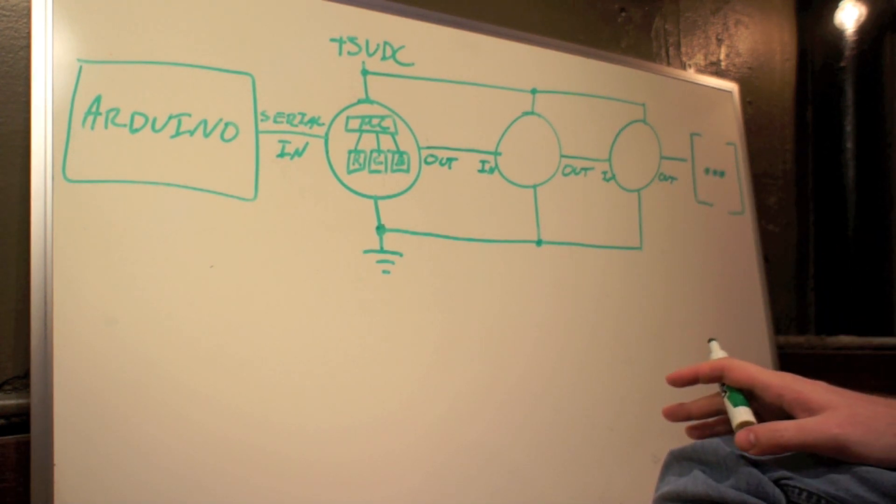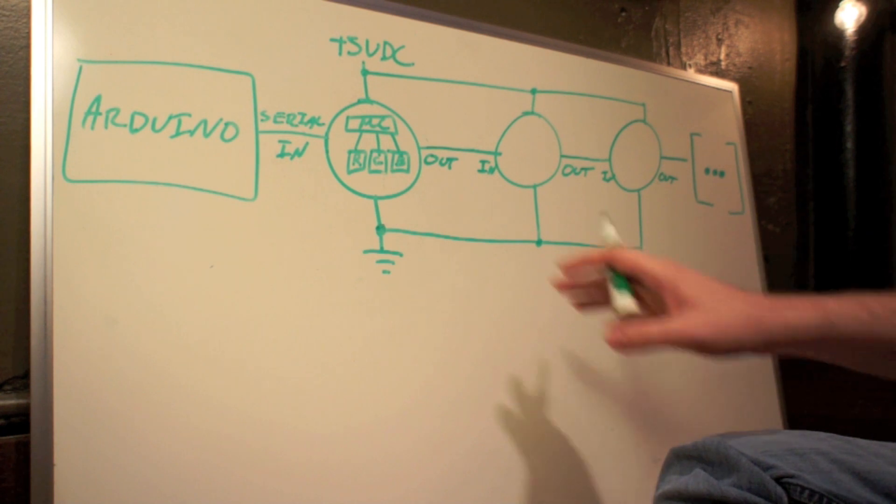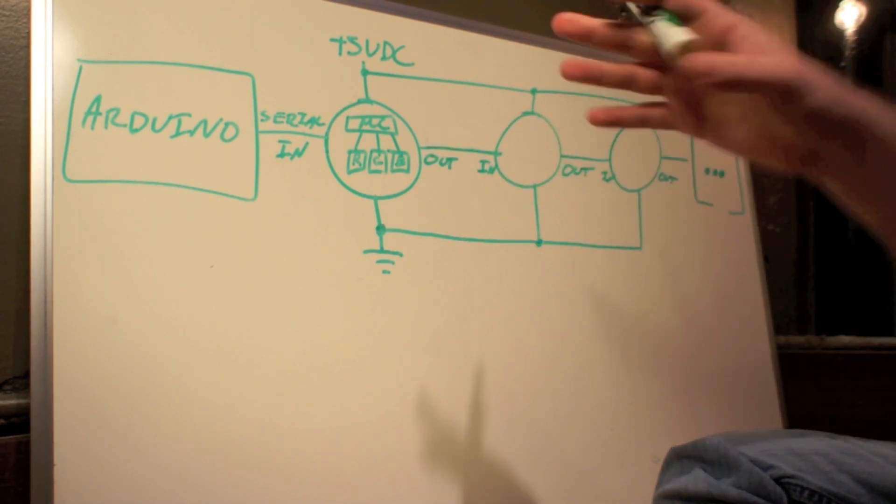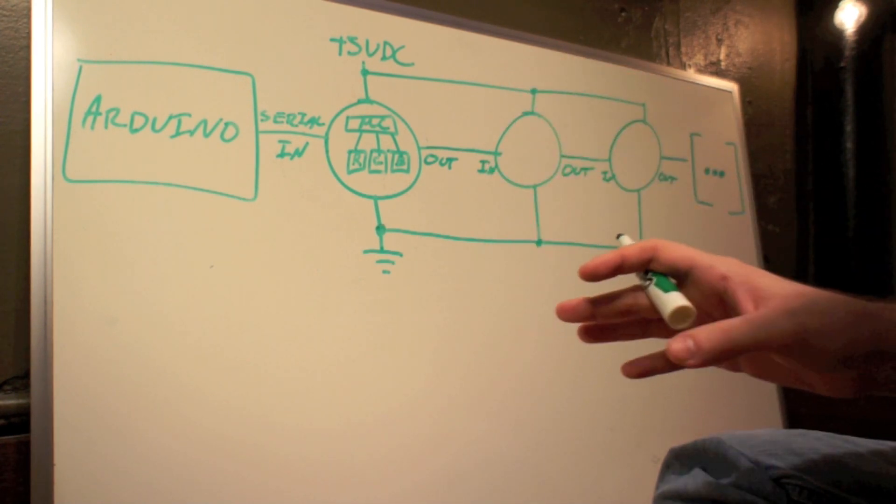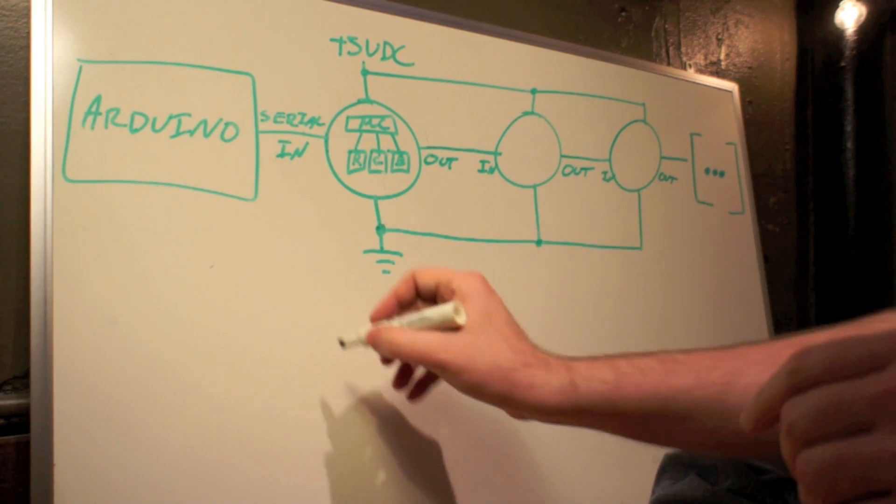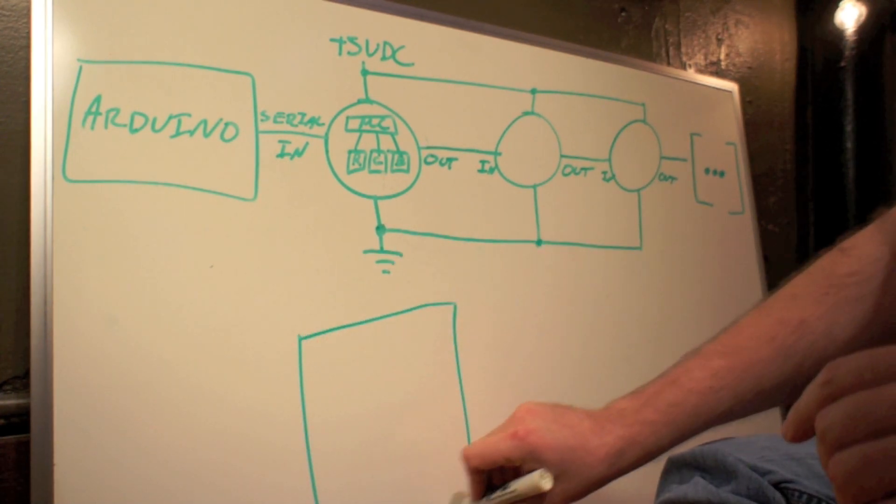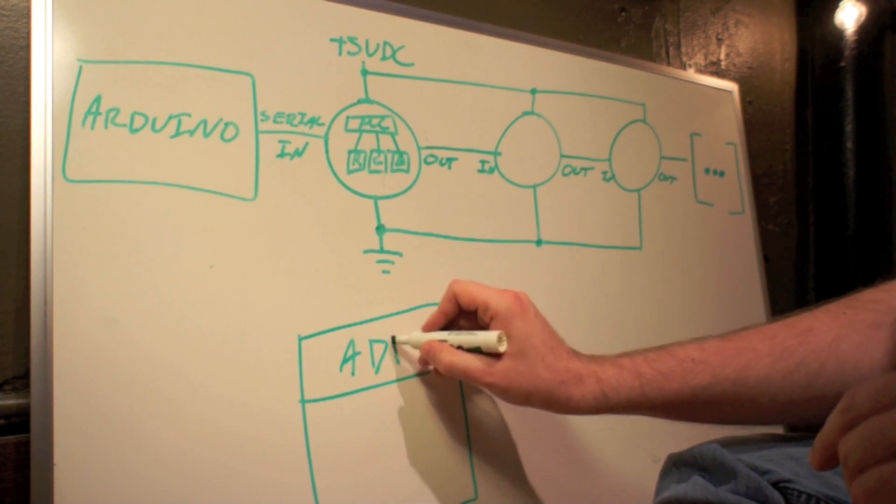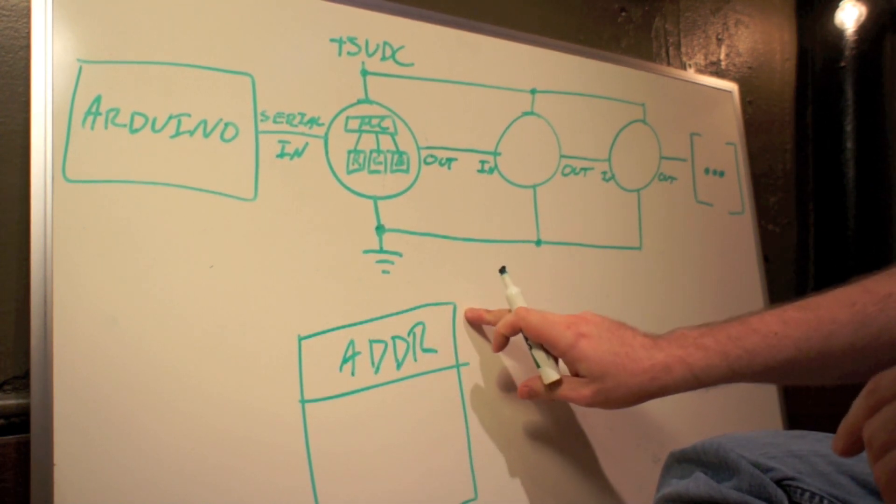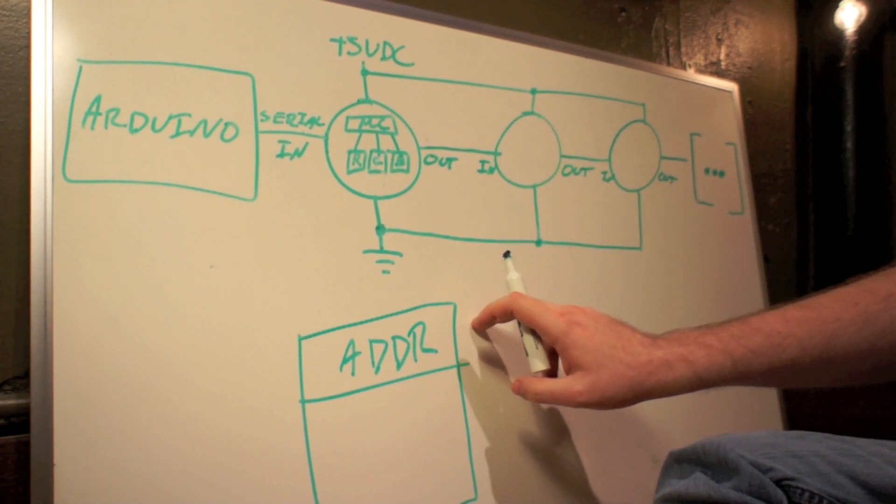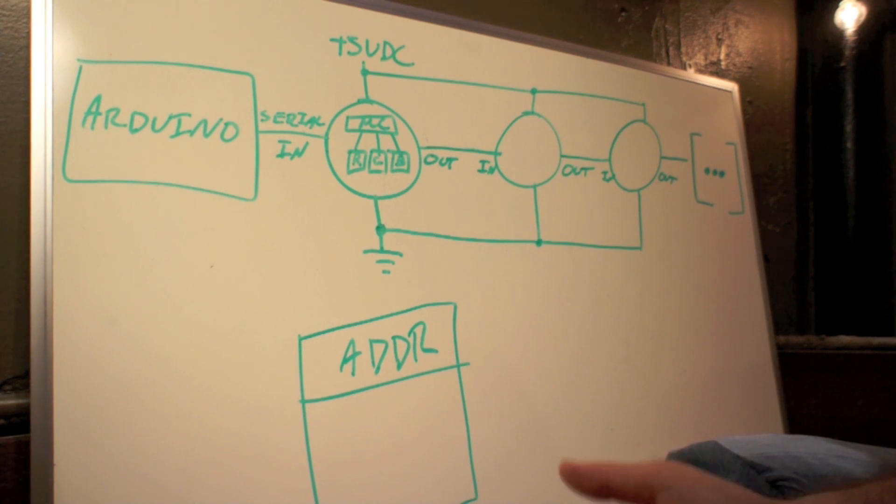Now the really clever thing about the addressing scheme for these bulbs is that each bulb's address isn't baked in from the factory. Every bulb, when it powers up, goes into sort of an address acquisition mode. The first bulb in the strand, the one closest to the controller, waits for a packet. It's the same kind of packet used to set color and brightness, but it only looks at the address. It sets its own address to the address in that packet, and then goes into normal operation, forwarding packets on to the next bulb in the chain.